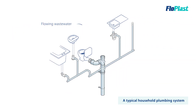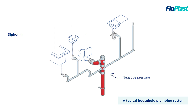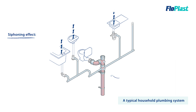Whenever any waste water flows inside a soil pipe, such as when a toilet is flushed, negative pressure builds up. This will then cause a siphoning effect, and to redress the balance, air tends to be drawn into the pipe from anywhere possible — normally plug holes in baths, sinks, and showers. The problem with this is that it allows unpleasant odours to be released into the home.